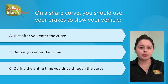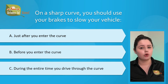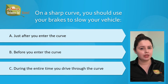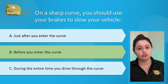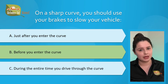Question number two: on a sharp curve you should use your brakes to slow your vehicle. A) just after you enter the curve, B) before you enter the curve, or C) during the entire time you drive through the curve. The correct answer is B, before you enter the curve. If a speed limit sign is not posted before a curve, you must judge how sharp that curve is and change your speed. You want to slow down before you enter the curve because braking on a curve can cause you to skid.